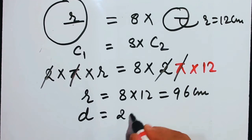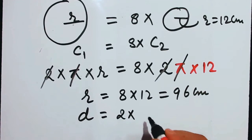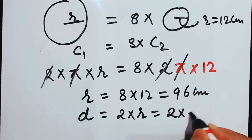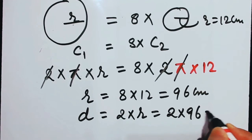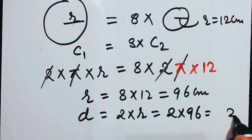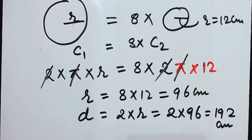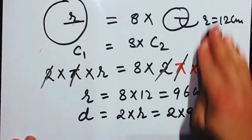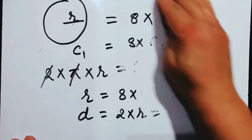They had asked us for the diameter, so diameter equals 2 times radius, which equals 2 times 96 equals 192 centimeters. Without wasting time, let us move to number 21.